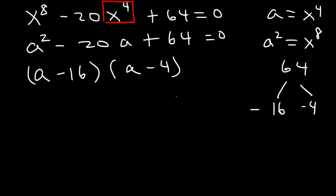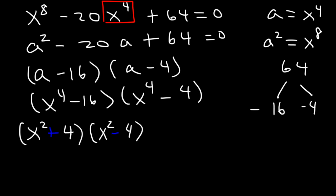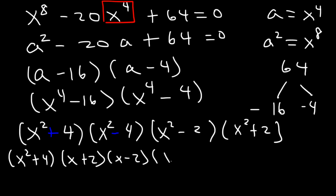Because a equals an x value with a high exponent, I'm going to replace a with x to the 4th at this point, since I can factor everything further. Using the difference of perfect squares technique: the square root of x to the 4th is x squared, and the square root of 16 is 4, giving x squared plus 4 and x squared minus 4. Then x to the 4th minus 4 factors as x squared minus 2 and x squared plus 2. And x squared minus 4 is x plus 2 and x minus 2. We can also factor x squared minus 2 as x plus root 2 and x minus root 2.